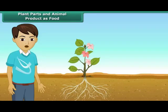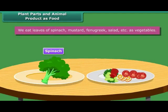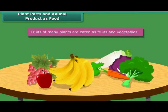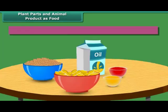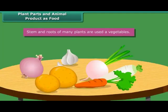Now, various parts of plants give us different types of food. We eat leaves of spinach, mustard, fenugreek, salad, etc. as vegetables. Fruits of many plants are eaten as fruits and vegetables. Seeds are used as cereals, spices, sprouts and for taking out vegetable oil. Stem and roots of many plants are used as vegetables.